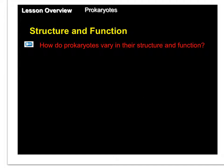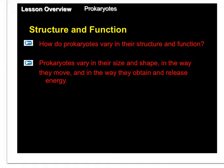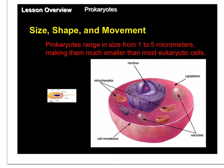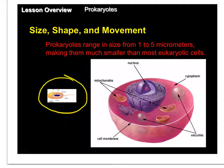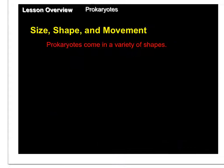Let's take a look at how prokaryotes vary in both their structure and function. Prokaryotes vary in their size, shape, the way they move, and in the way they obtain and release energy. Prokaryotic bacteria are not very big compared to eukaryotic cells — in fact, the size of a prokaryotic cell is close to the size of a mitochondria or even a chloroplast.